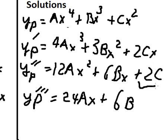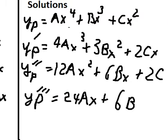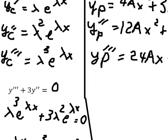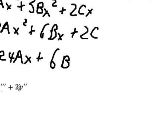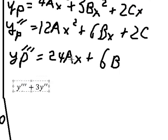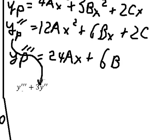Taking the third derivative of yp we get 24Ax and 6B. The constant term gives zero. Now I will substitute these into the differential equation.